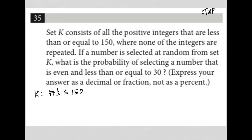If a number is selected at random from set K, what is the probability? Okay, so anytime I see this word probability on the test, I am thinking, what do I want? That's what goes in my numerator. And what do I have? That's what goes in my denominator. So what is the probability of selecting a number that is even and less than or equal to 30?